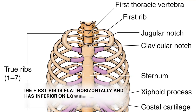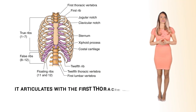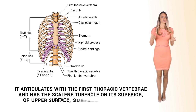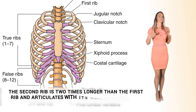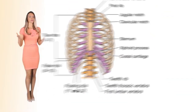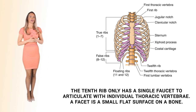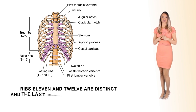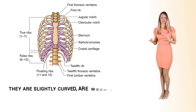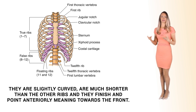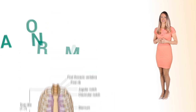The first rib is flat horizontally and has inferior and superior surfaces that are broad. It articulates with the first thoracic vertebra and has the scalene tubercle on its superior surface that is distinct. The second rib is two times longer than the first rib, and it articulates with the thoracic vertebrae, same as all other ribs. The tenth rib only has a single facet to articulate with its individual thoracic vertebra. Ribs 11 and 12 are distinct — they articulate only with the vertebral body, lack a neck or tubercle, are slightly curved and much shorter than the other ribs, and point anteriorly, which is why they are called the floating ribs, since they do not attach to the costal cartilages like a normal rib.